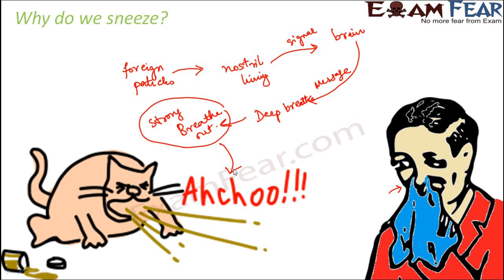Sneezing is completely controlled by the brain. As soon as foreign particles irritate the nostril lining, a signal is sent to the brain, which immediately sends the signal to throw them out. While sneezing, we breathe out so strongly that all the foreign particles are expelled.